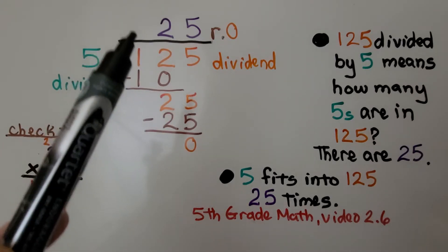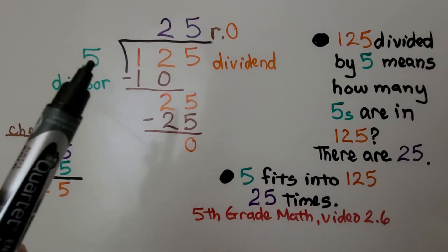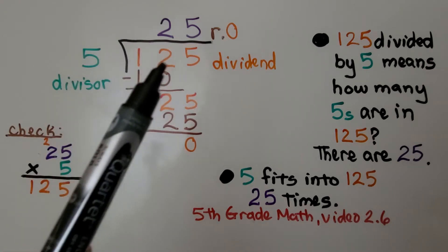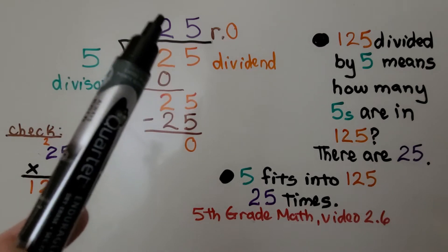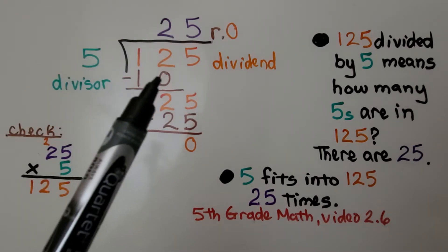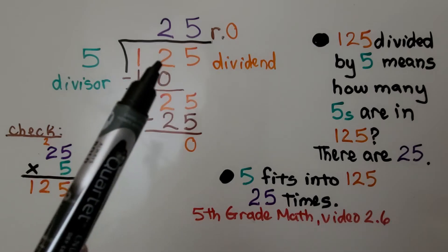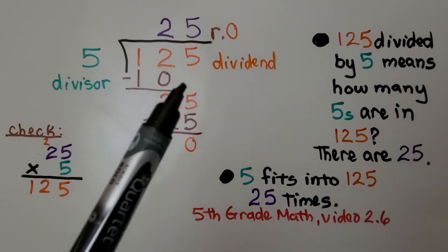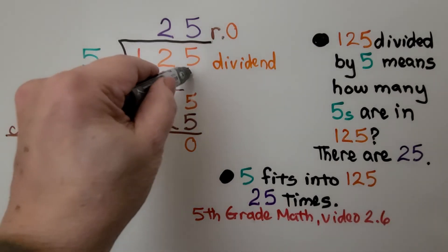So we're not putting an answer above the 1. Can 5 fit into 12? Yes, 2 times. 5 times 2 is 10, so we subtract 10 from this 12, we get a 2, and it's this 5's turn to come down.